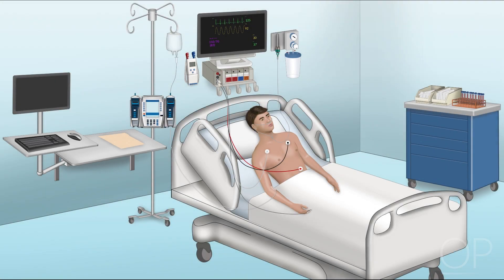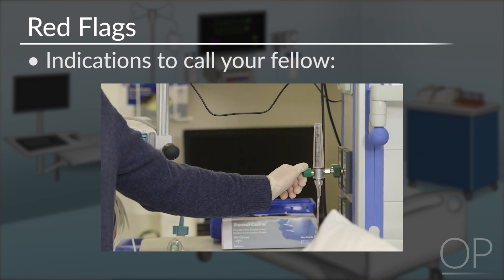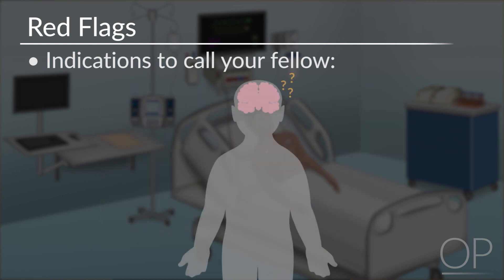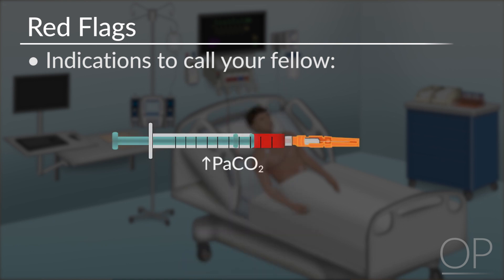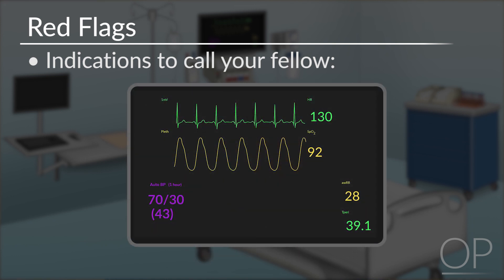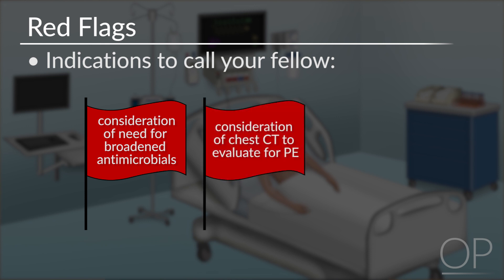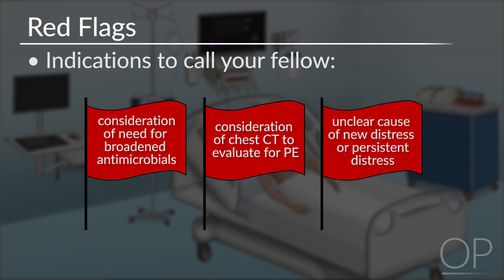Now let's discuss red flags or trigger points to call your fellow and or the ICU. Indications to call your fellow include escalating supplemental oxygen requirement, altered mental status and hypercarbia, a new pneumothorax, concern for sepsis, consideration of need for broadened antimicrobials, consideration of chest CT to evaluate for pulmonary embolism, and an unclear cause of new distress or persistent distress despite your initial interventions.